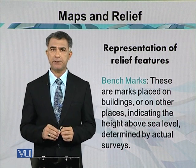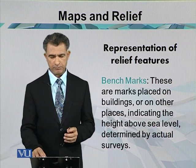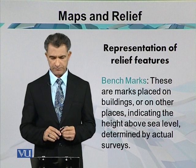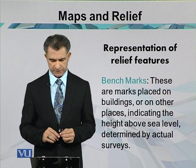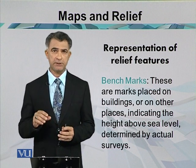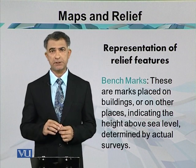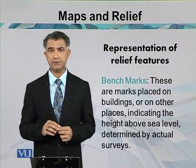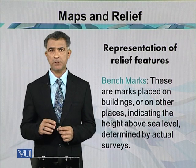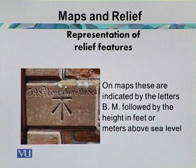In highlighting the heights of the area, benchmarks are very important. These are marks placed on buildings or other places indicating the height above sea level, determined by actual surveys — ground surveys conducted by certain techniques such as total station, theodolite, automatic level, or GPS. On a map, these are indicated by the letters 'BM' followed by the height in feet or meters above sea level.